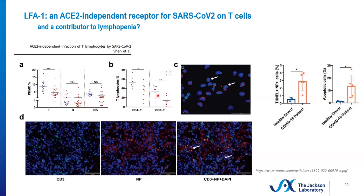The reduction in T cells was particularly severe for the CD8-positive cytotoxic T cells. They also looked at postmortem lung tissue. T cells are stained with the pan-T cell marker CD3 in green and viral antigen in red, and you can see the co-localization in yellow showing that there were infiltrating T cells into the lung tissue that did harbor viral antigen. They also completed a TUNEL assay in order to determine that apoptosis was occurring in SARS-CoV-2 infected T cells, and that apoptosis was much higher in COVID-19 patients compared to healthy donors.